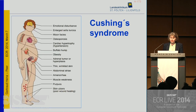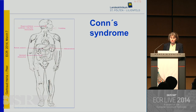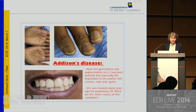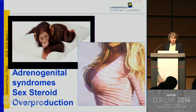If the lesions are functioning, they can cause Cushing syndrome, Conn syndrome, Addison disease, or adrenogenital syndromes, especially if there is an overproduction of sex steroid hormones.